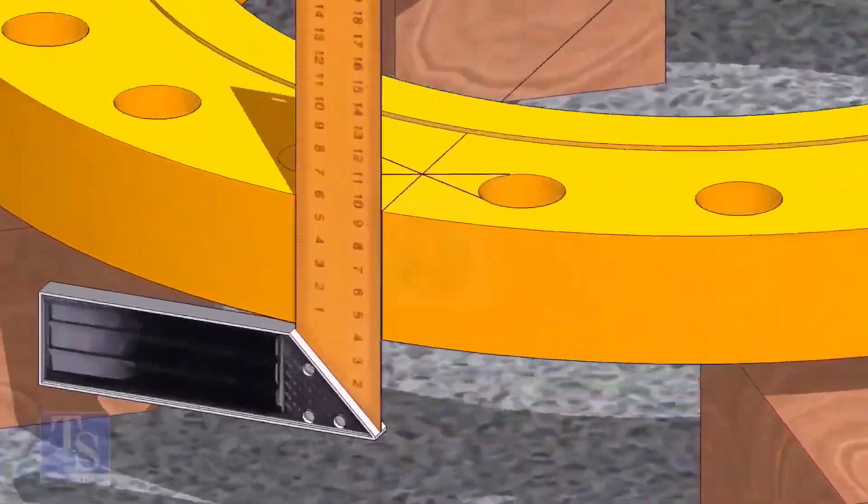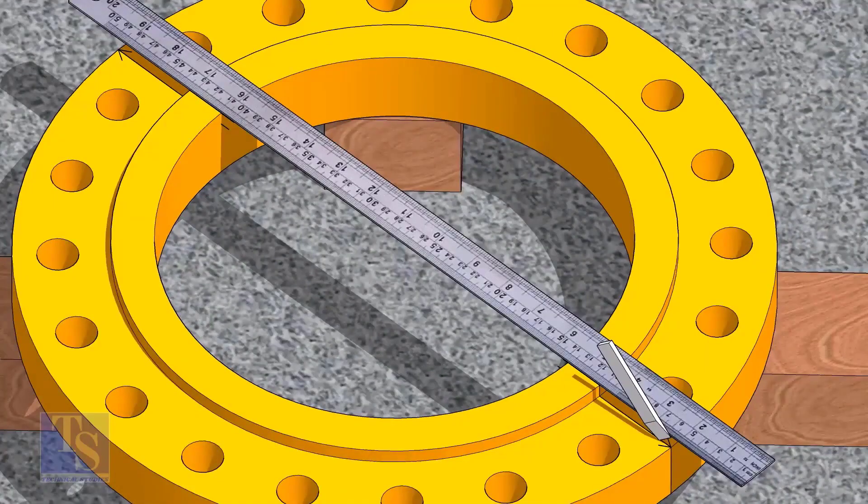Now, transfer the center line to the sides of the flange. Overturn the flange and transfer the center line on the back side of the flange.